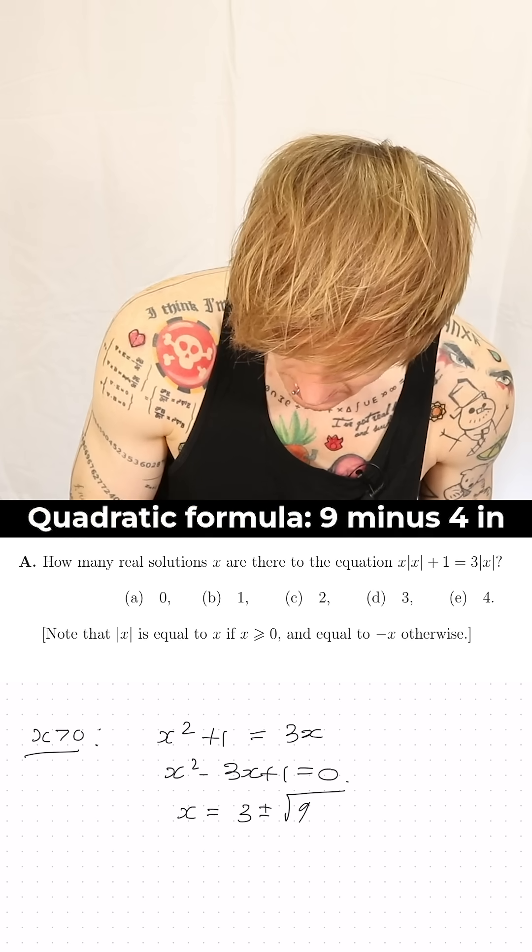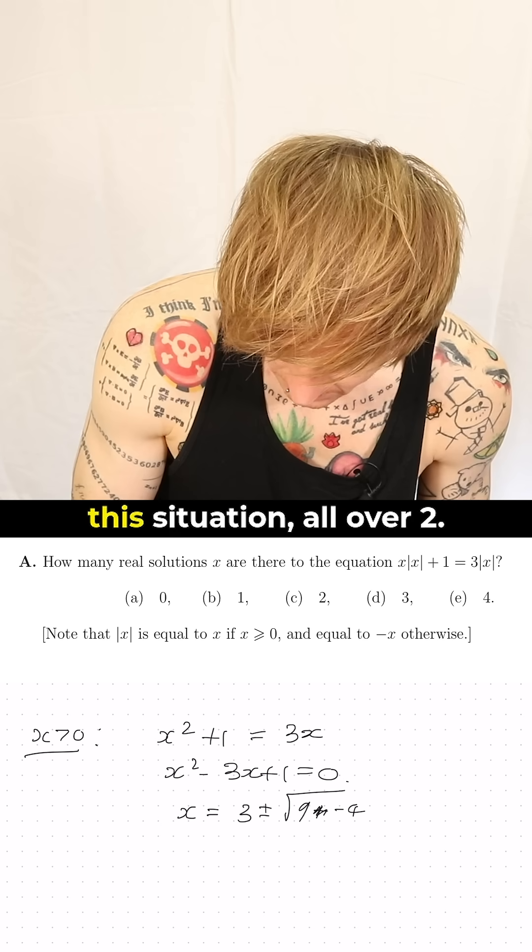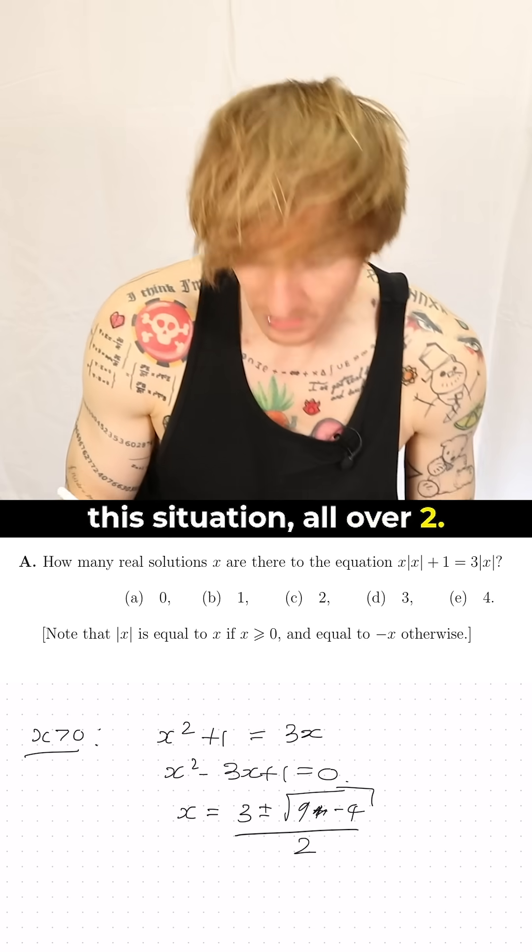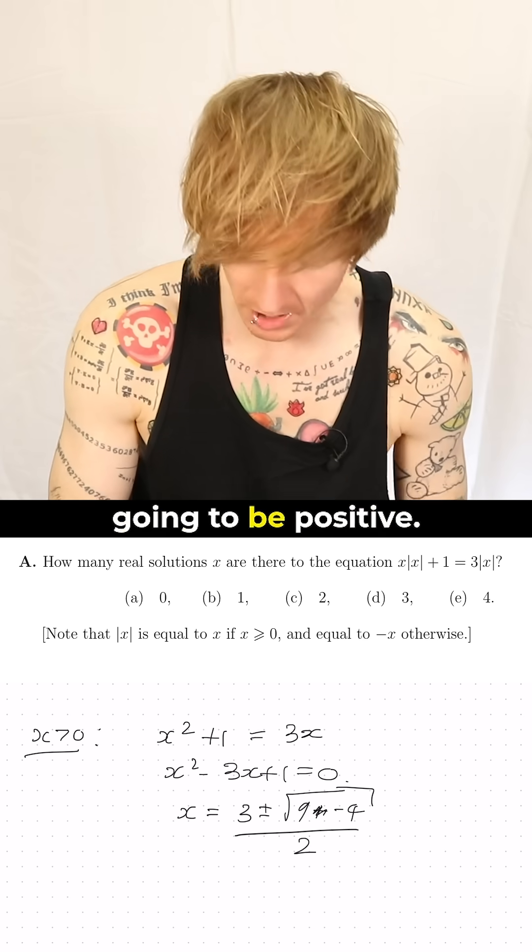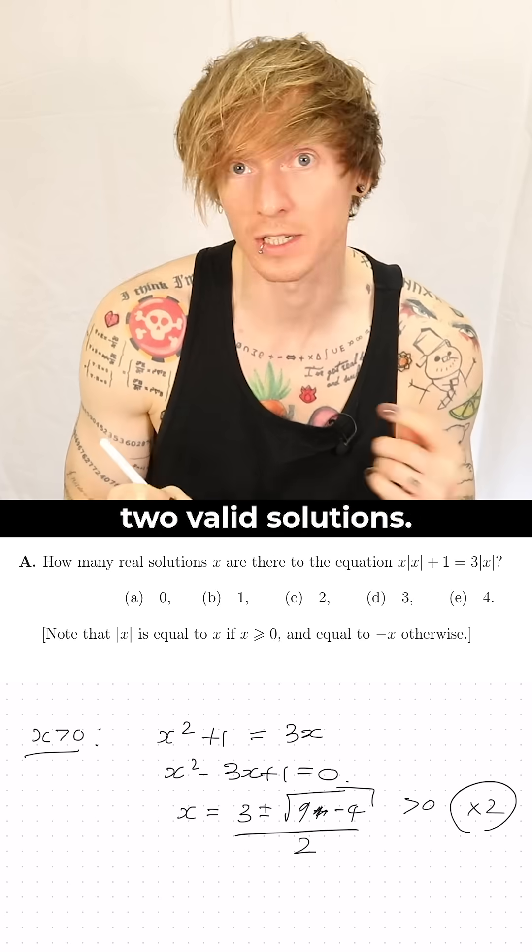Quadratic formula, 9 minus 4 in this situation, all over 2, so they are actually both going to be positive, so that's going to give us two valid solutions.